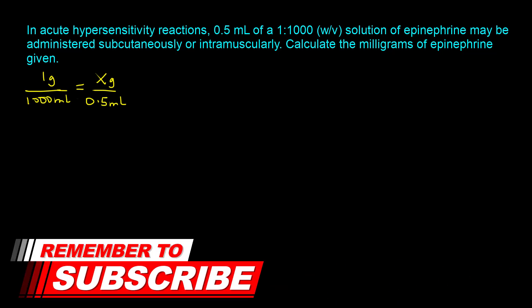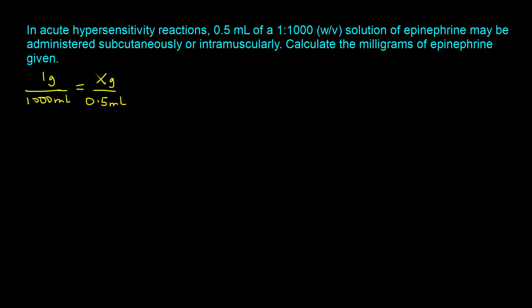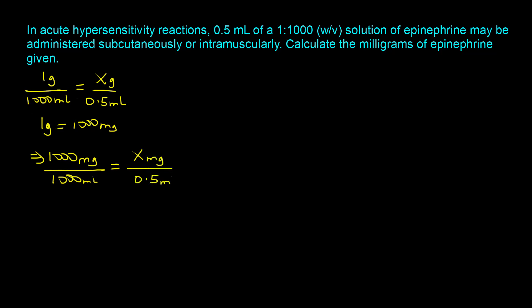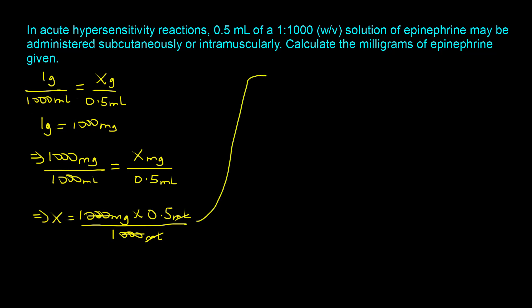Since our answer is in milligrams, we convert grams to milligrams at this stage to make calculations easier. The conversion is 1 gram equals 1000 milligrams, so substituting into the proportion: 1000 milligrams of epinephrine in 1000 milliliters equals x milligrams over 0.5 milliliters. Solving for x: x equals 1000 milligrams times 0.5 milliliters divided by 1000 milliliters. The milliliters cancel, and x equals 0.5 milligrams.